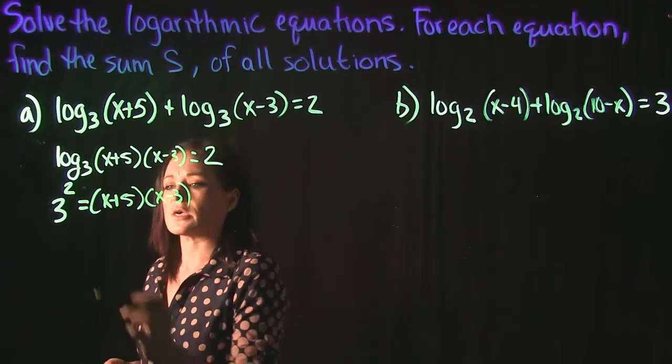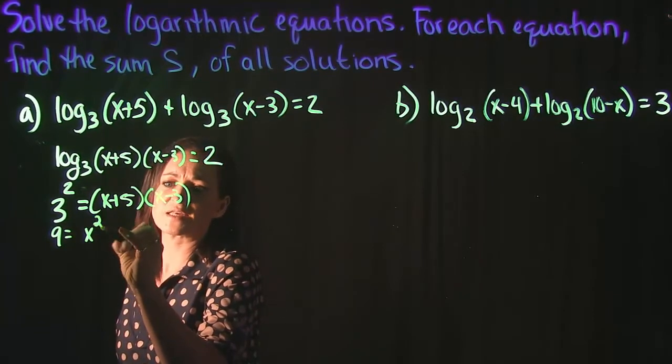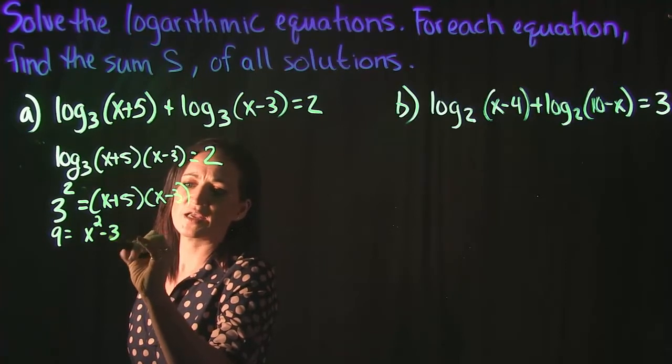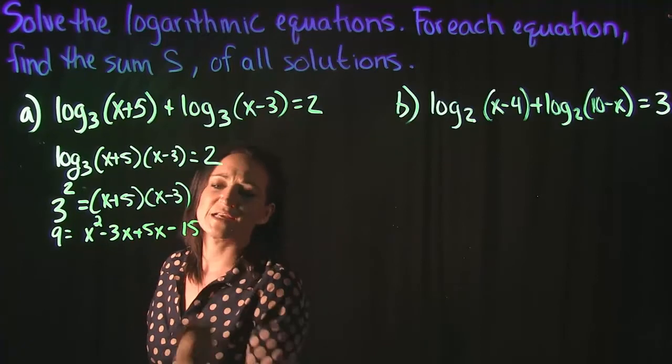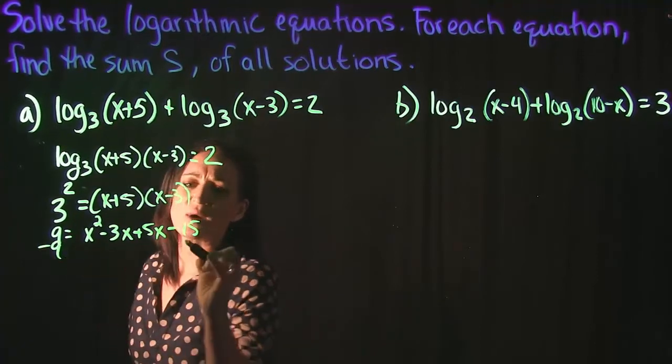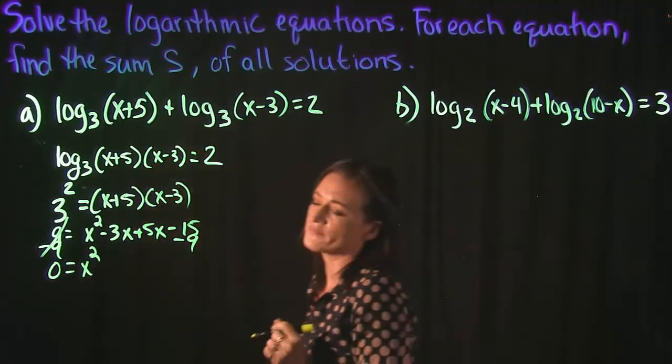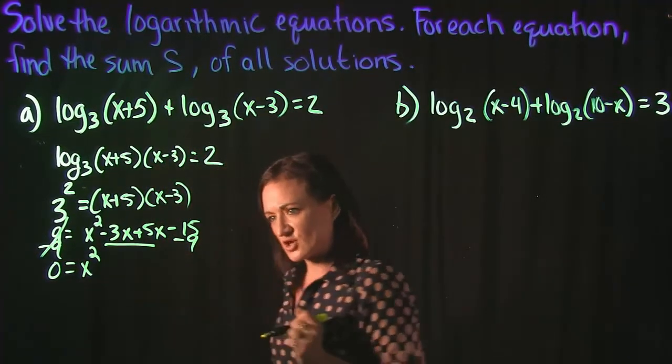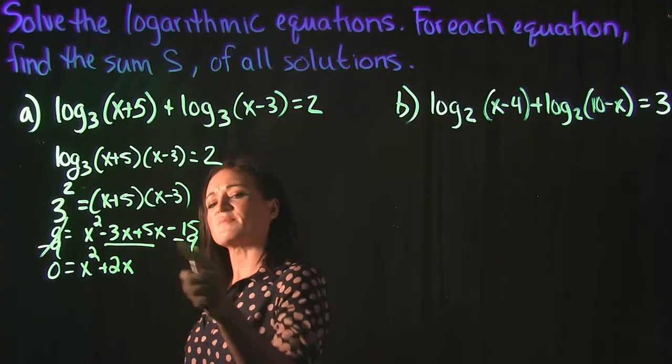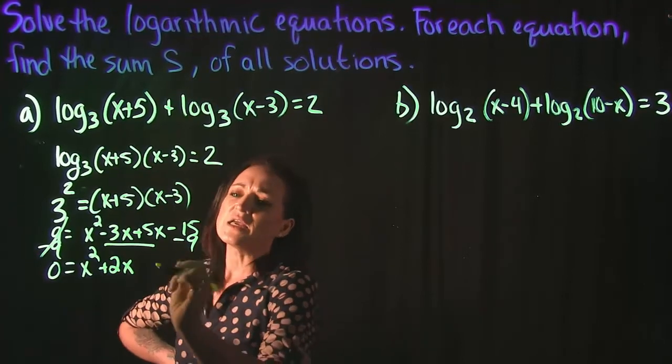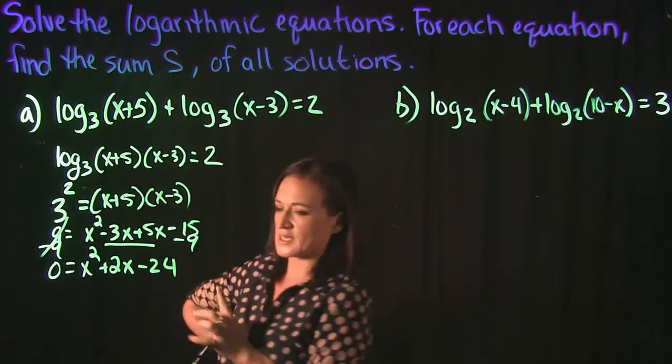Let's do a little bit of cleanup here. 3 squared is equal to 9. When we multiply this out, x times x is x squared, x times negative 3 gives us negative 3x, then we get a positive 5x and minus 15. Let me move this 9 over to the other side so it could be in proper quadratic form. Negative 3x plus 5x is 2x, and this minus 15 minus 9 gives us a total of minus 24 for our quadratic equation.